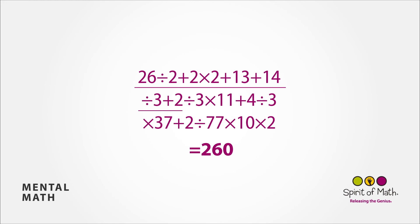Add 2 more is 21, and divide it by 3 is 7. Multiply that by 11 is 77, and add 4 is 81. Divide that by 3 is 27. Multiply that by 37 is 999.